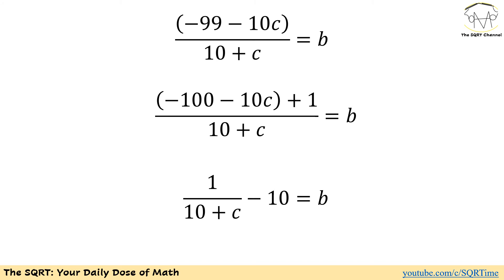As you can see, I have 10 + c, I have 10c, and I have 99, which is 1 less than 100 or 10 times 10. I'm going to try to factor out something from the numerator to be similar to the denominator. As a result, I'm going to write -99 as -100 + 1. Now we can write the whole expression as (-100 - 10c + 1)/(10 + c) = b. And after a modification, we are going to get 1/(10 + c) - 10 = b.